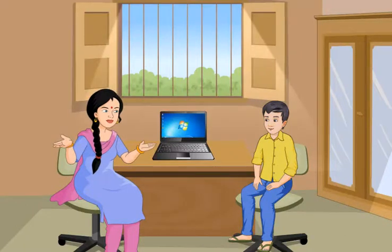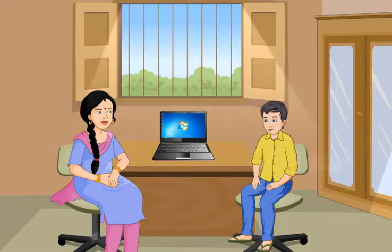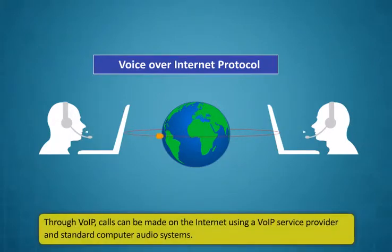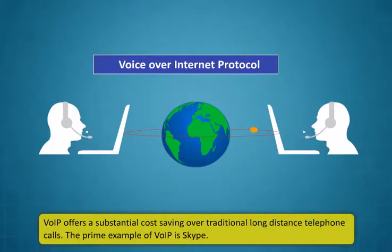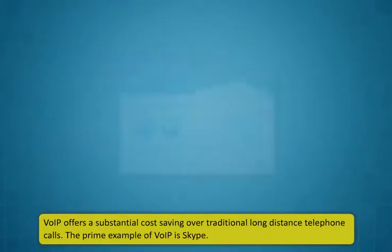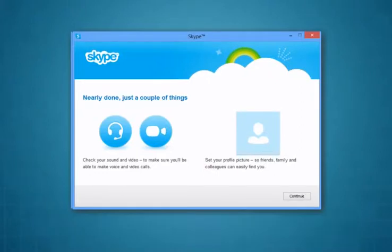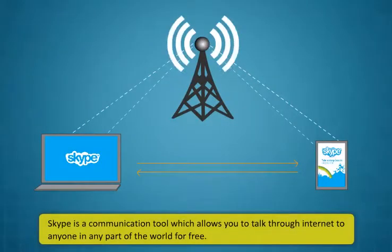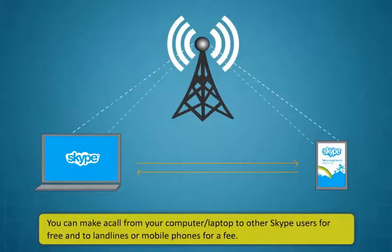There are various interesting ways through which you can use the internet. One of them is that you can also send voicemails or use the internet as a mobile phone. There are services that make internet telephone possible. Voice over internet protocol is a technology used for internet phone services. Through VoIP, calls can be made on the internet using a VoIP service provider and standard computer audio systems. VoIP offers a substantial cost saving over traditional long-distance telephone calls. The primary example of VoIP is Skype.